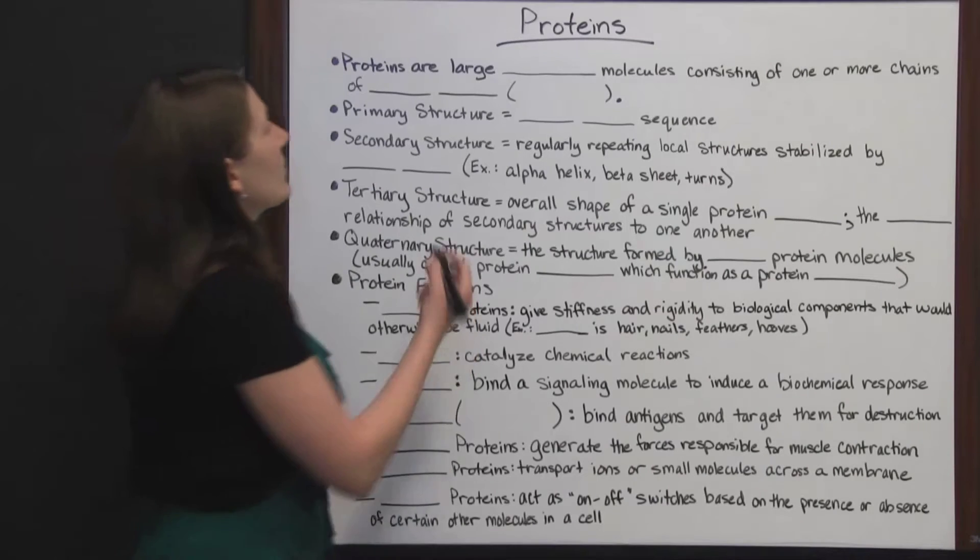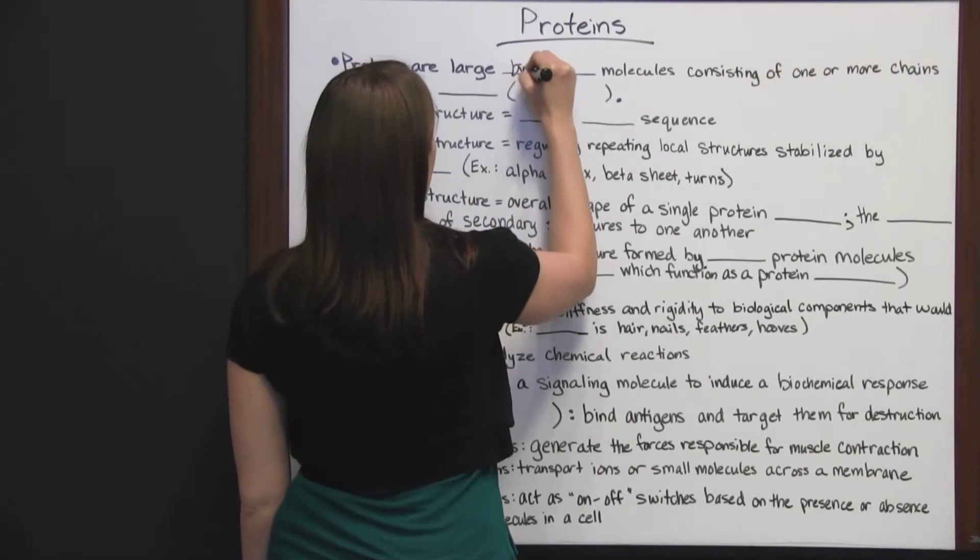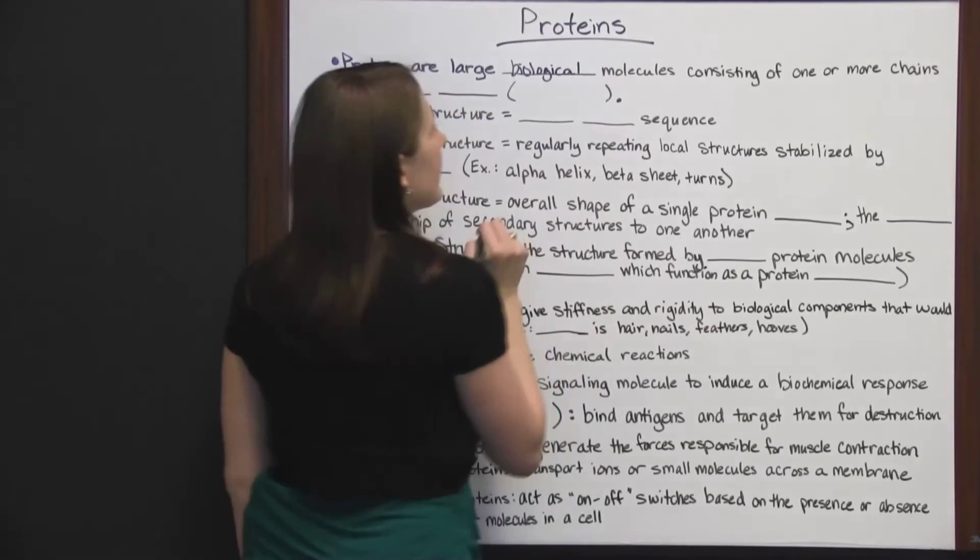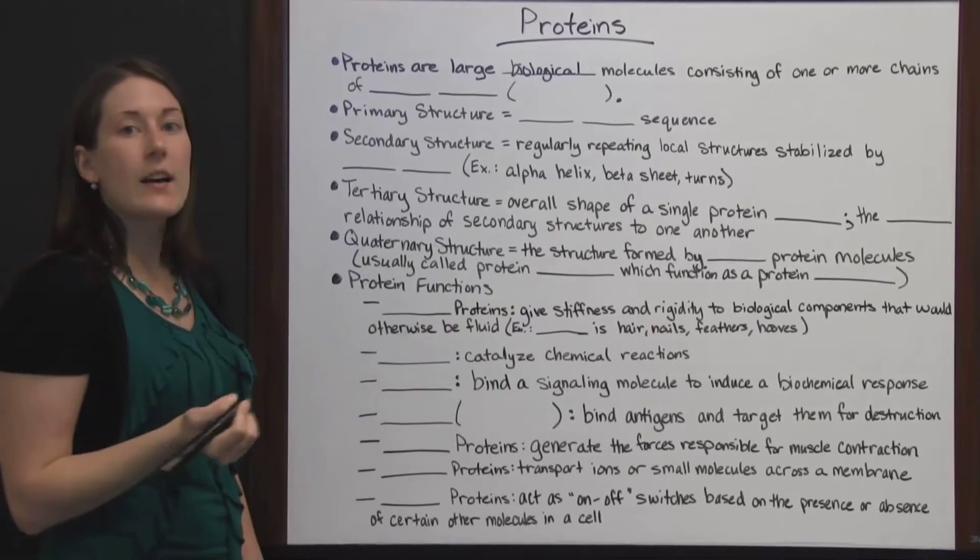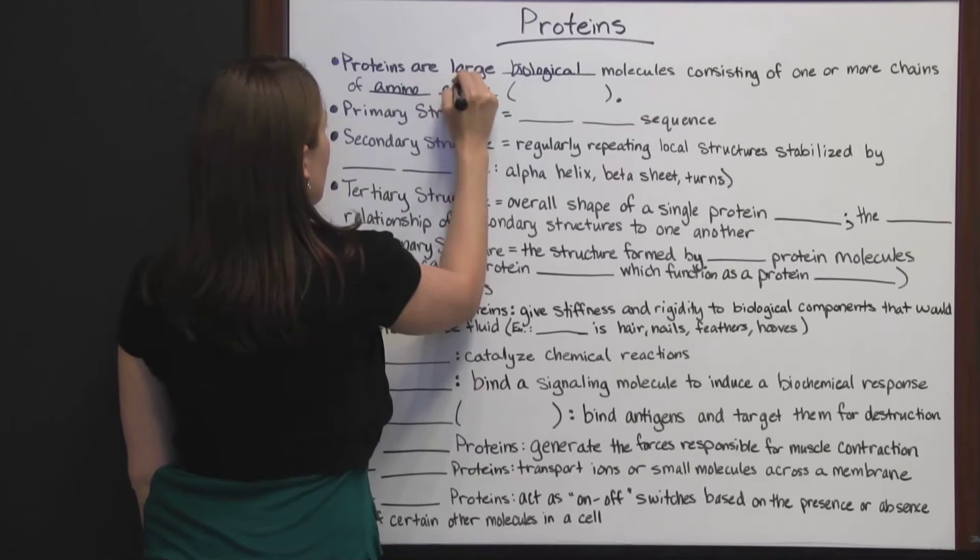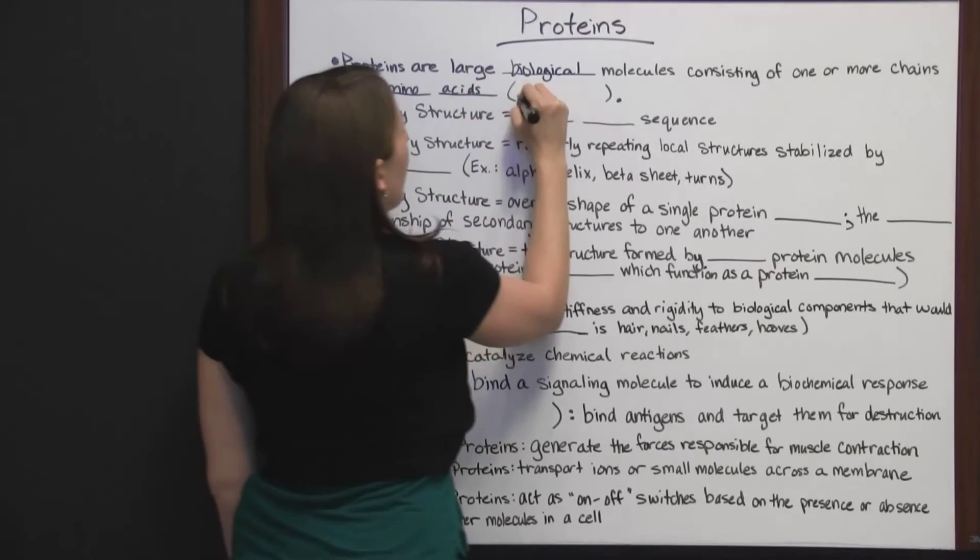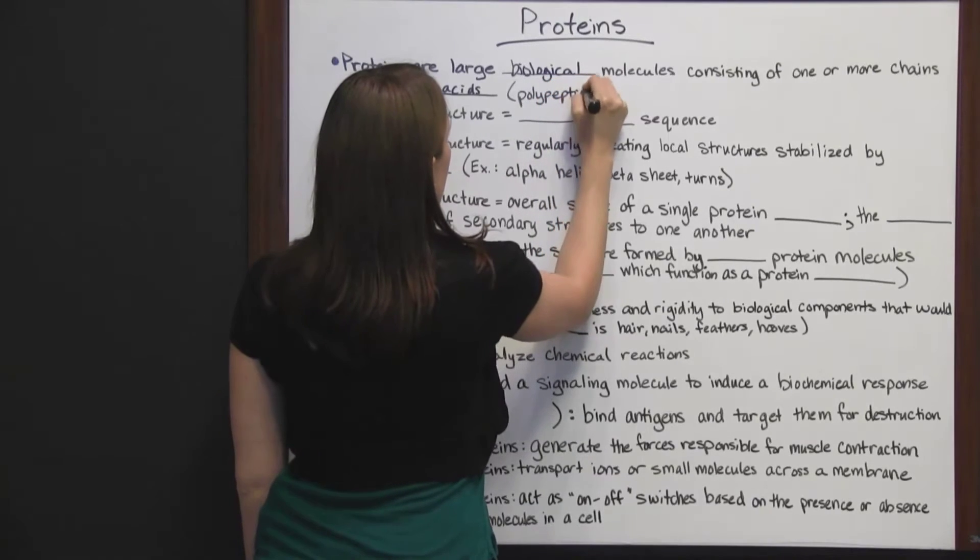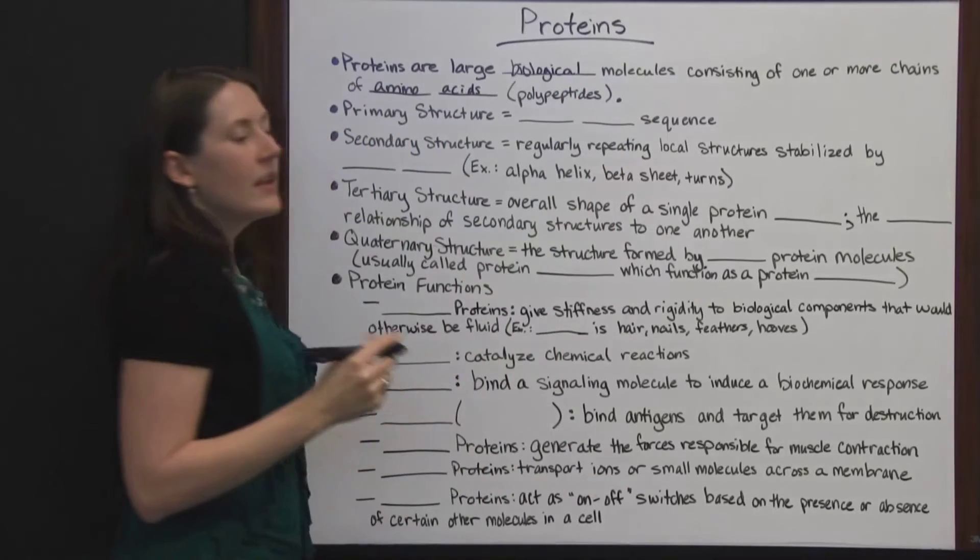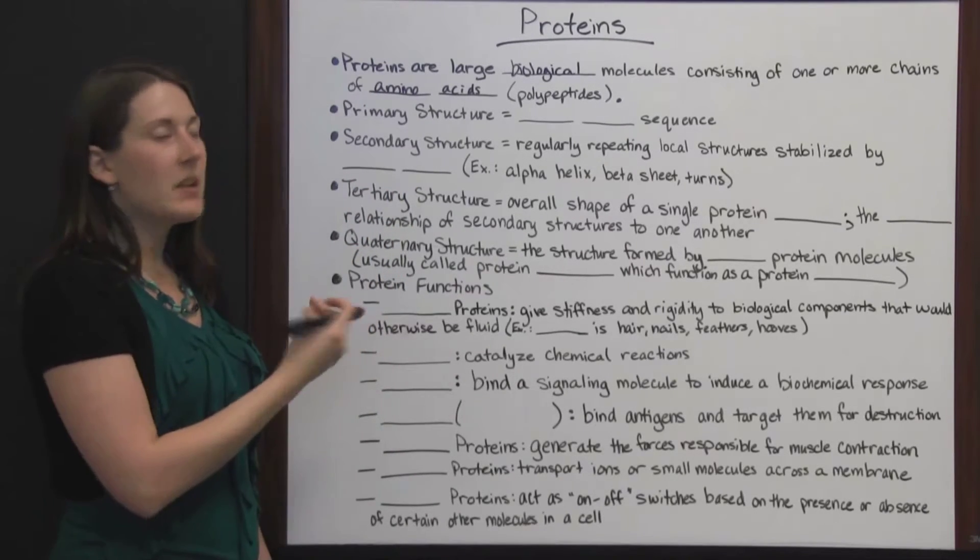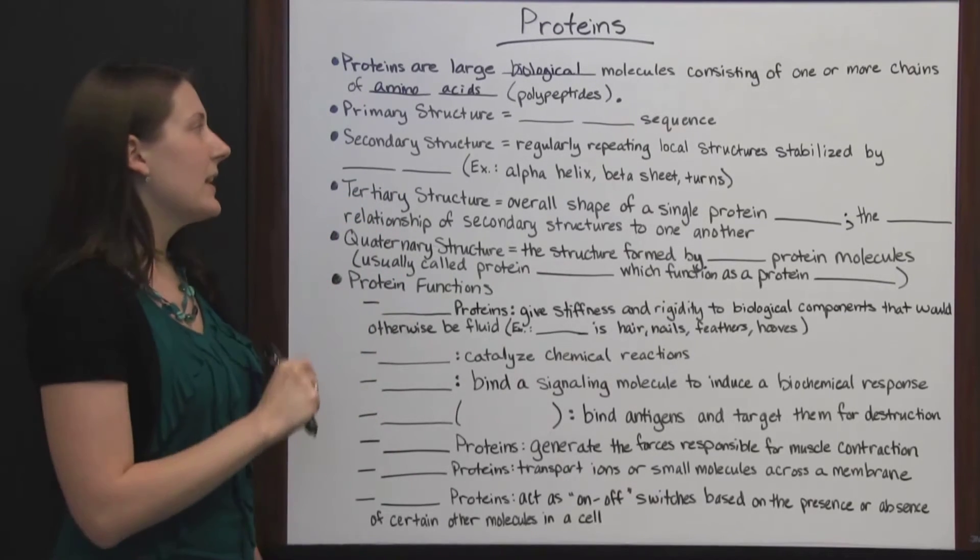Proteins are large biological molecules consisting of one or more chains of amino acids, which are known as polypeptides. A polypeptide is an amino acid chain, not just an amino acid, but the whole chain of them connected.